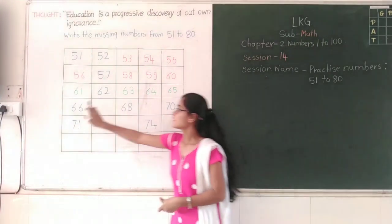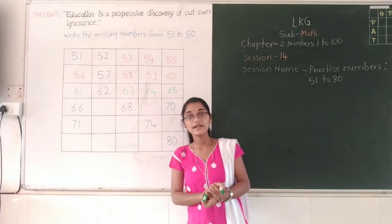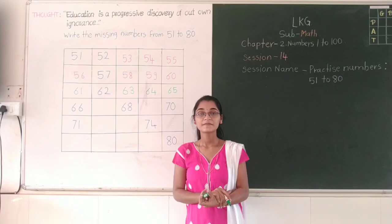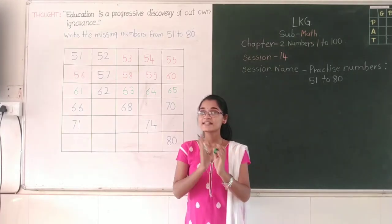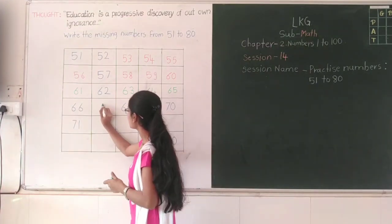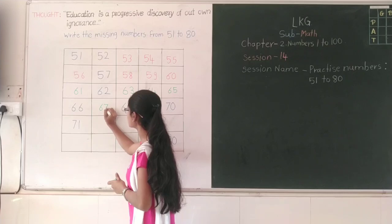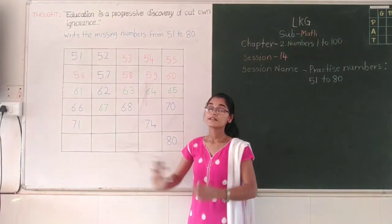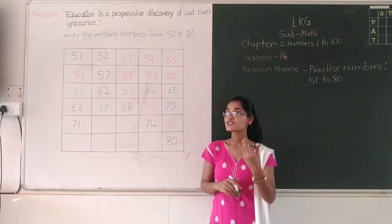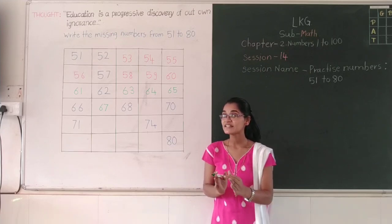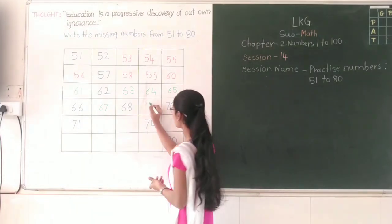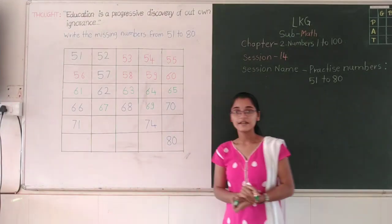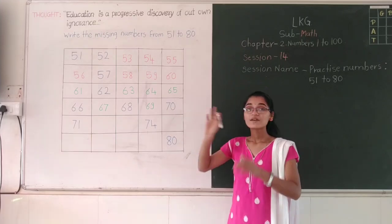Then after 65, 66 will come. Okay? And after 66, which number will come? 67. Right? So you have to write the missing numbers like this. Then after 67, 68 is here. Okay? Now tell me, after 68, which number will come? 69. Okay? So you have to write 69. And last, 70. Right?